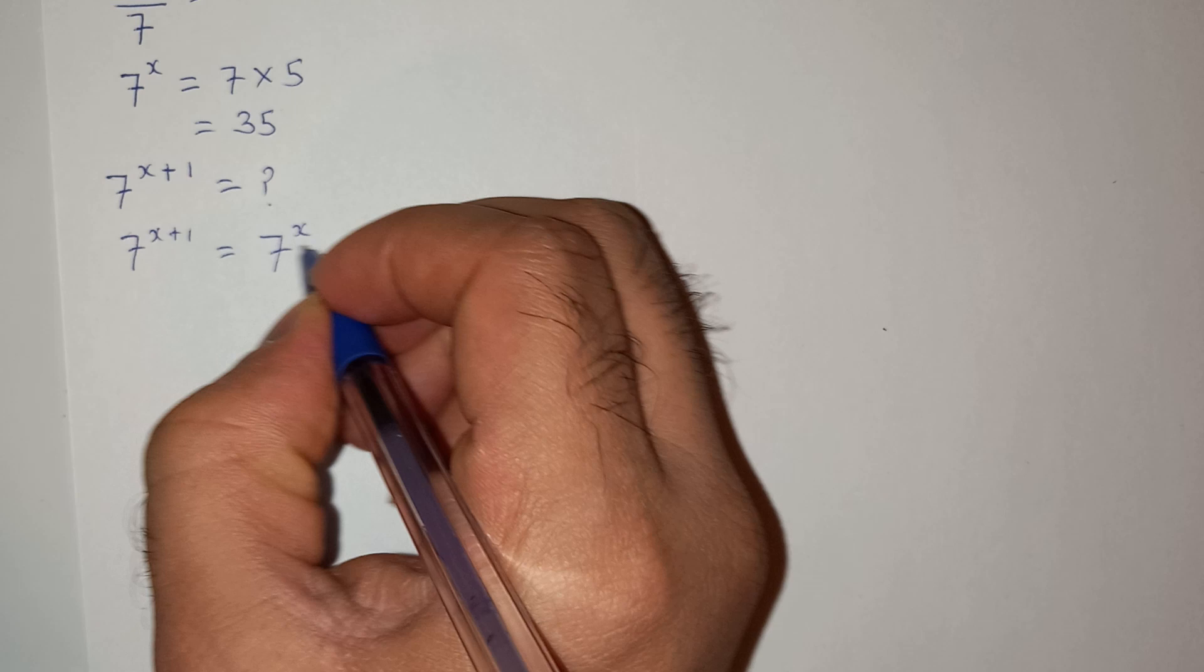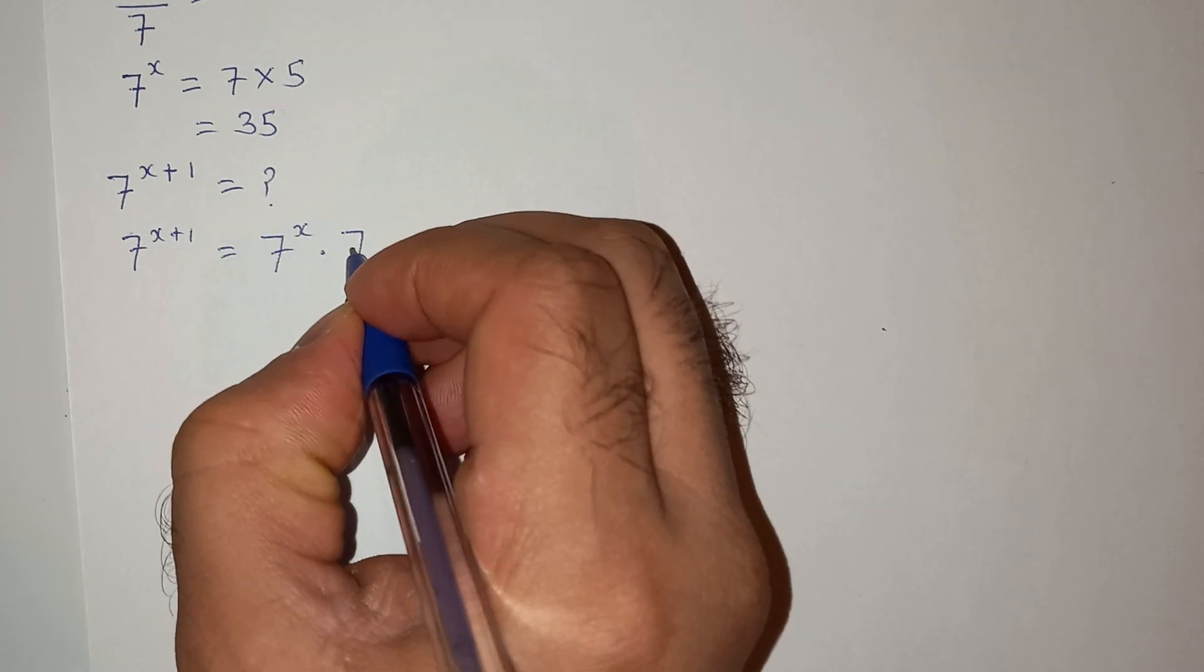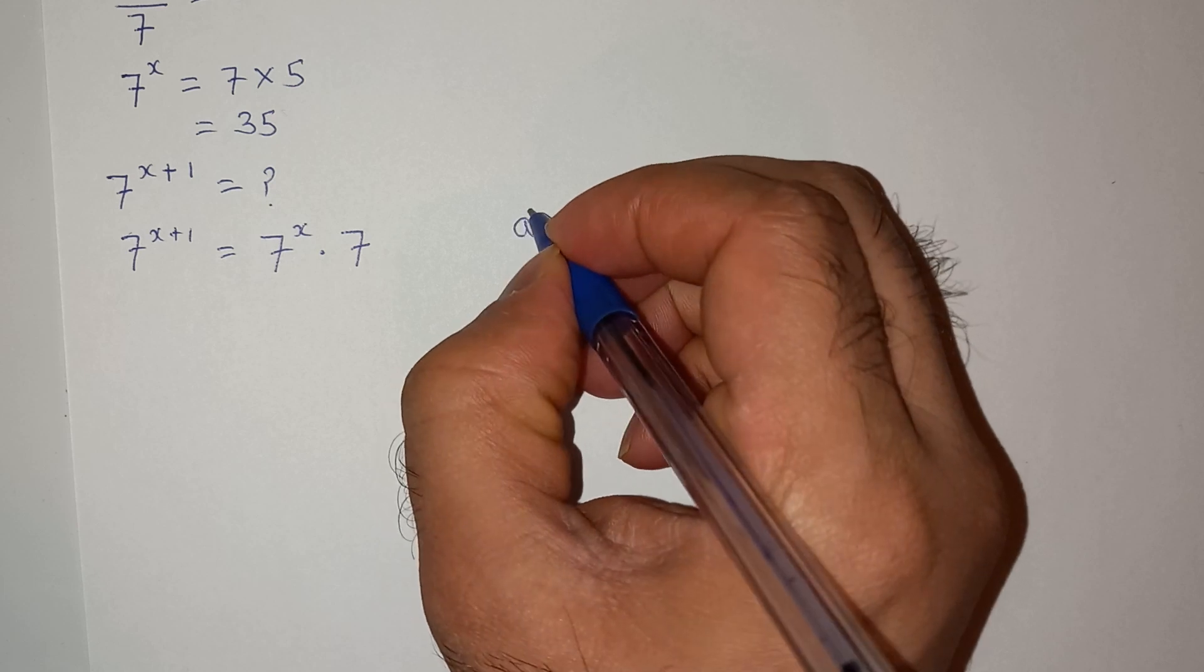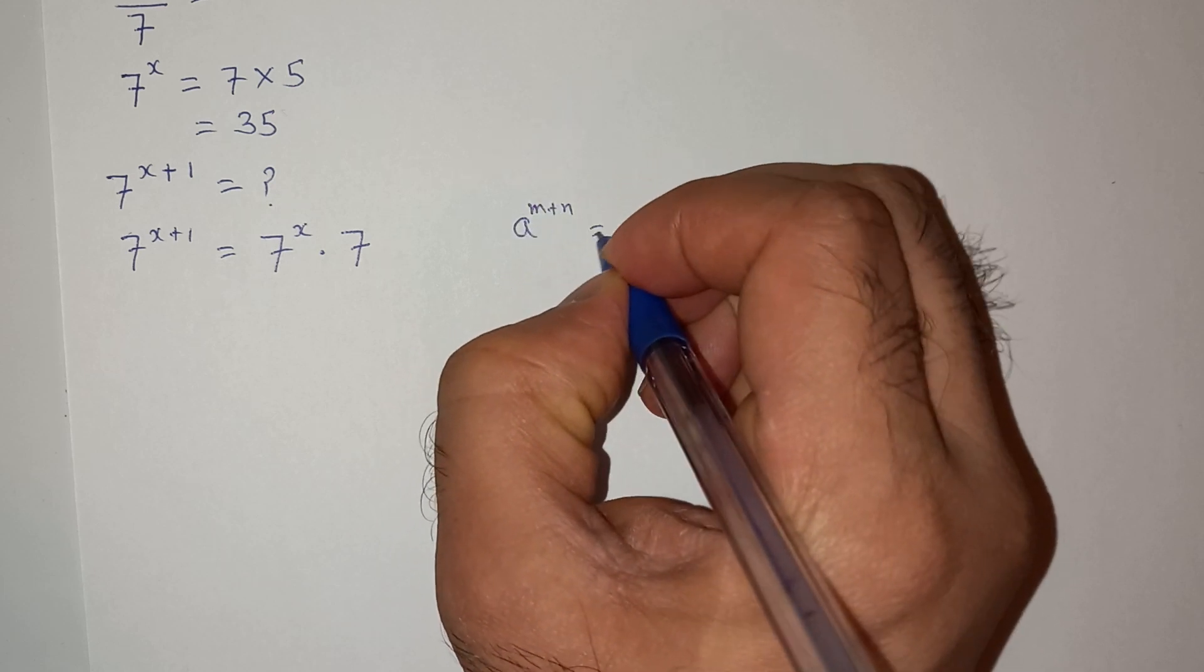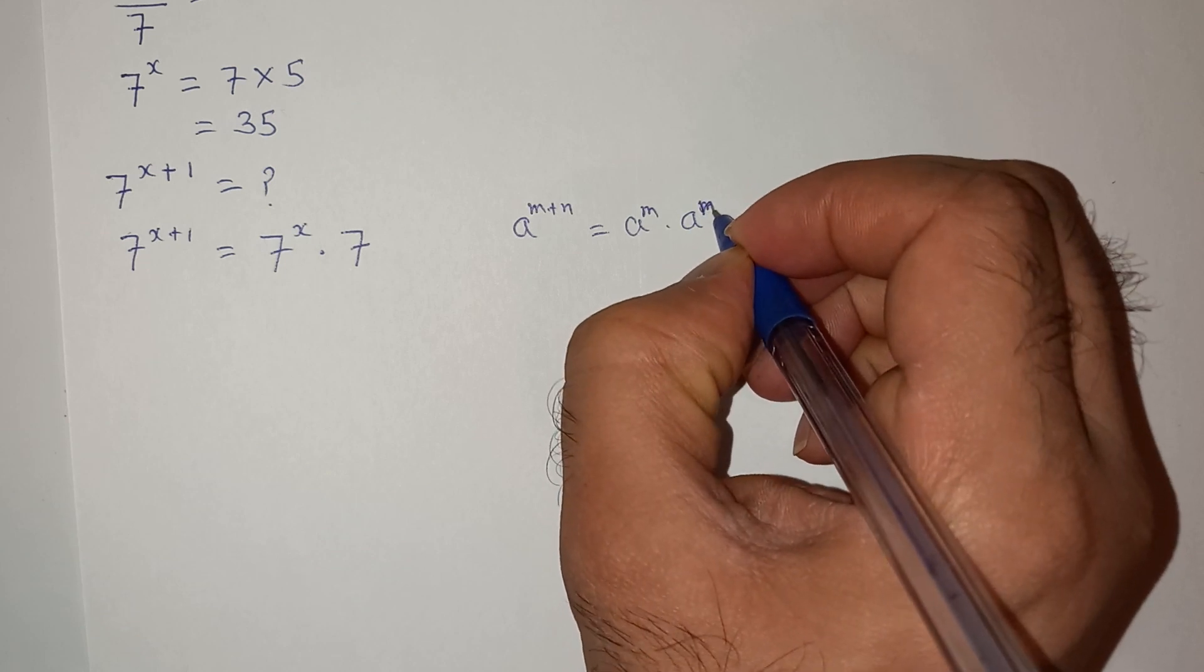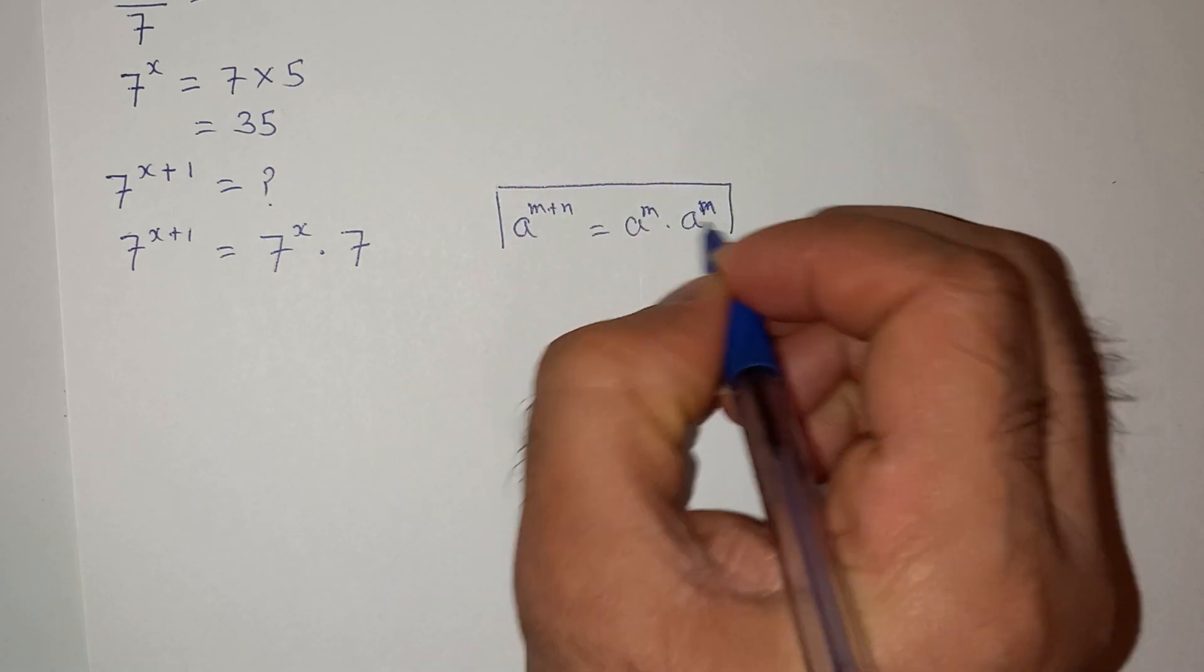So this is basically this formula a power m plus n equals to a power m multiplied by a power n. This exponential rule.